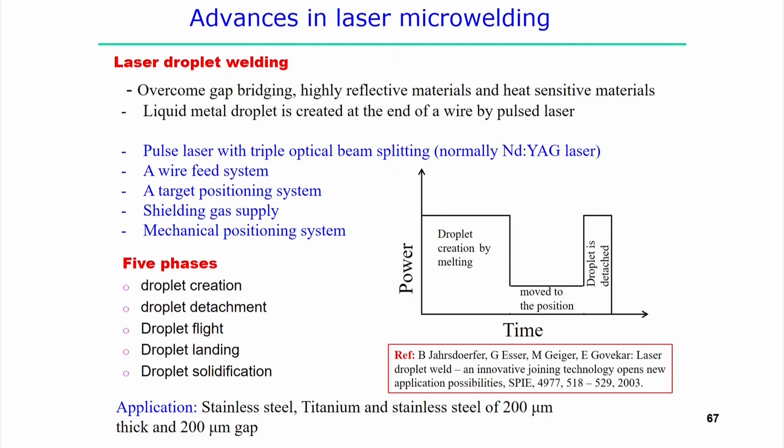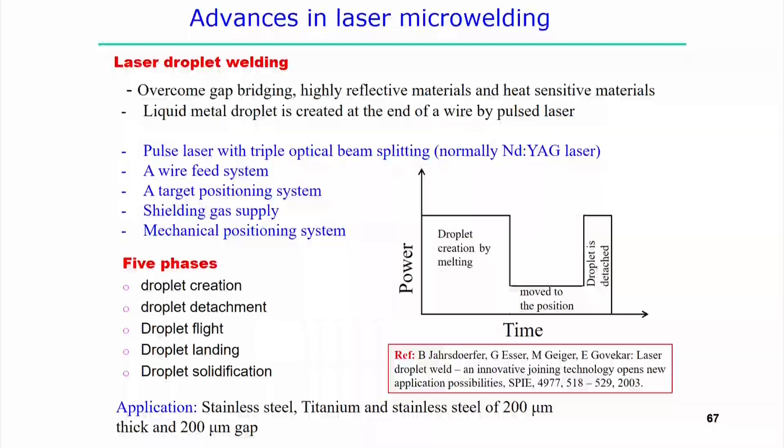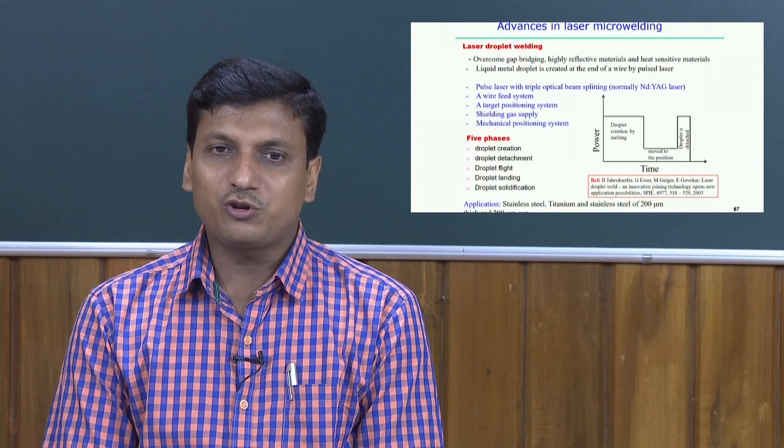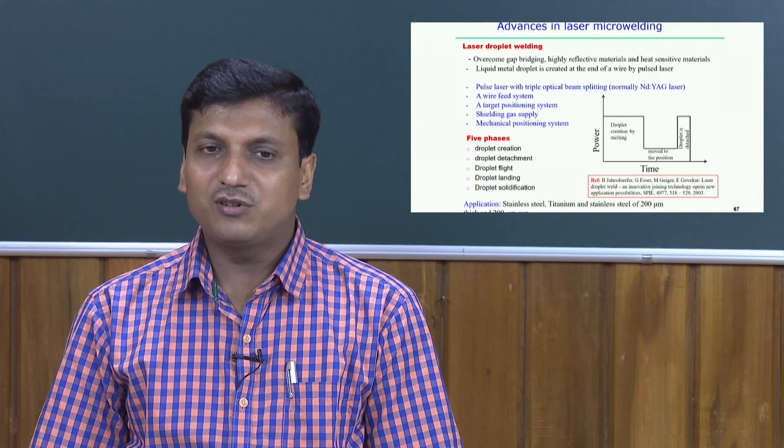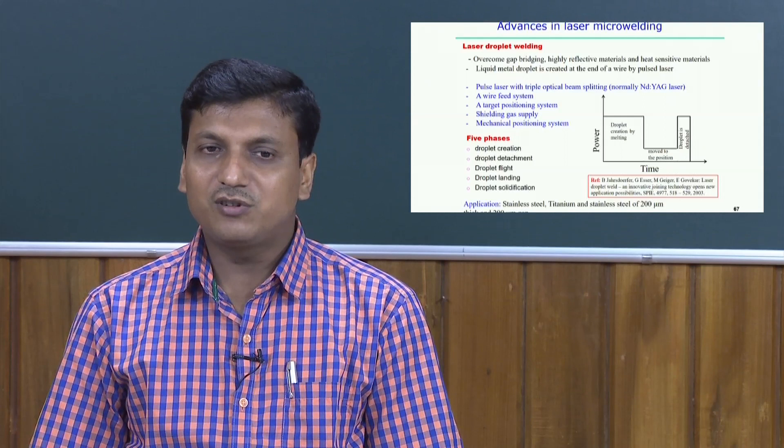Typical applications include joining stainless steel to itself, and titanium to stainless steel — which is very difficult in conventional welding processes and normally requires solid-state welding. Using laser droplet welding, titanium and stainless steel plates of 200 micrometer thickness can be joined, and even with a gap of 200 micrometers — which is very large relative to the plate thickness — the joint is possible.